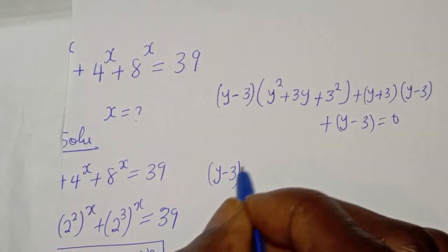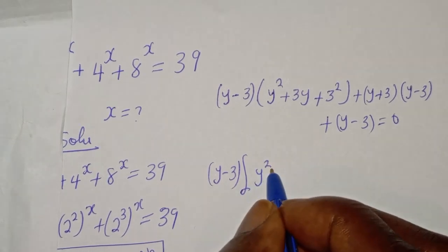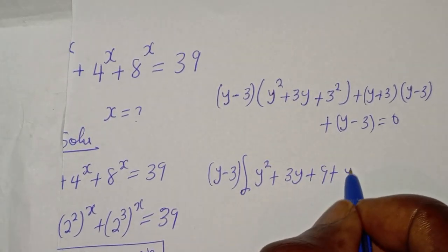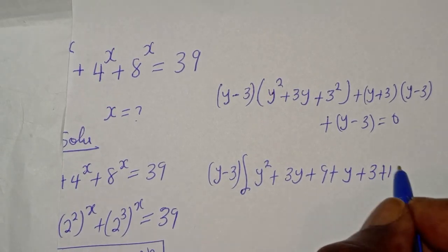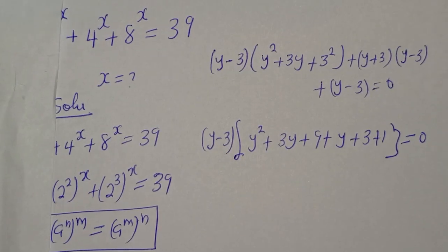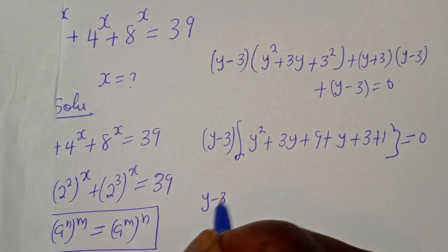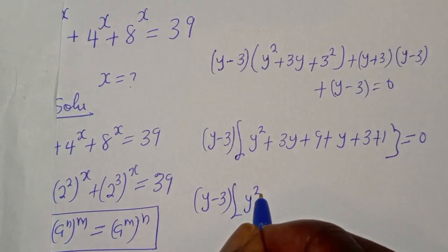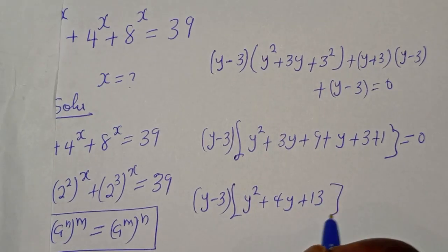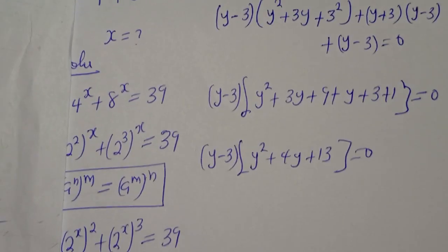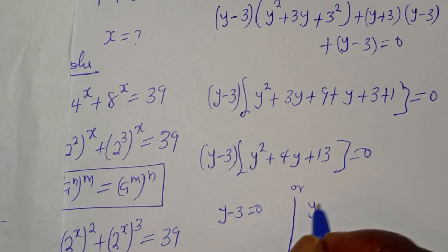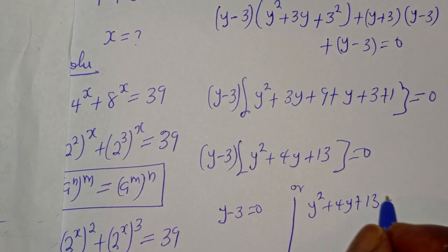Bringing out the common factor y minus 3, we have: (y minus 3)(y squared plus 3y plus 9 plus y plus 3 plus 1) equals 0, which simplifies to (y minus 3)(y squared plus 4y plus 13) equals 0. There are two cases: y minus 3 equals 0, or y squared plus 4y plus 13 equals 0.